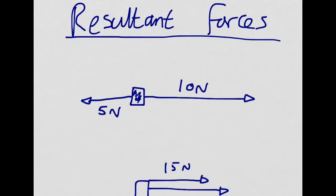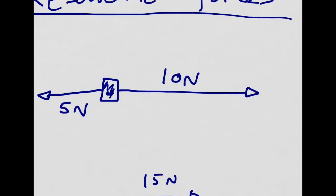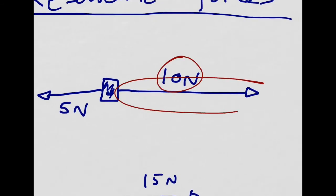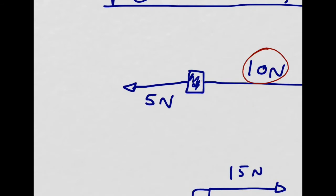Do you remember when I said that forces were a vector quantity? A vector quantity is a quantity with a magnitude and a direction. This block has got two forces acting on it. This one, the one on the right, has a magnitude of 10 newtons and is acting to the right. This force has a magnitude of 5 newtons and is acting to the left. So we've got a magnitude and a direction.